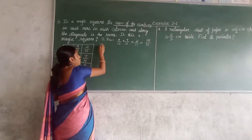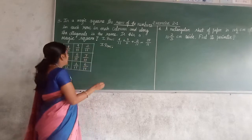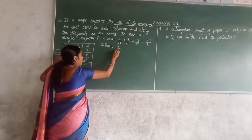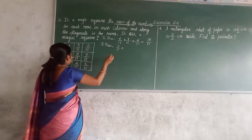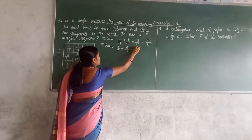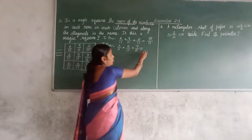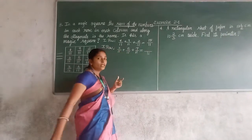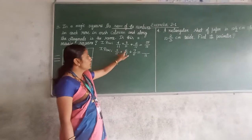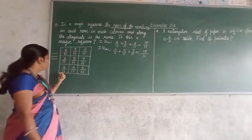Then let us go for the second row. Taking down you have to be very careful. You should not miss out the numbers. 3 upon 11 plus 5 upon 11 plus 7 upon 11. When the denominator is same, 3 plus 5, 8. 8 plus 7, 15. Now the second row is over.